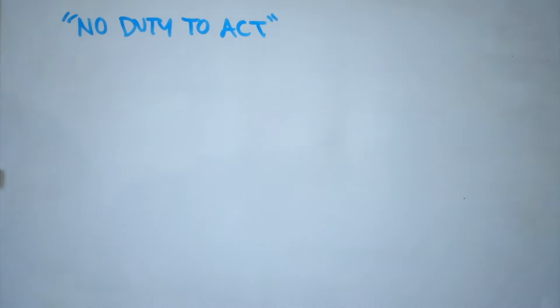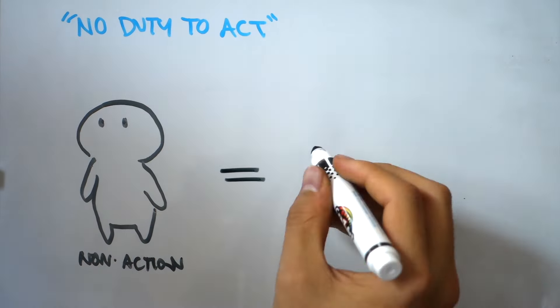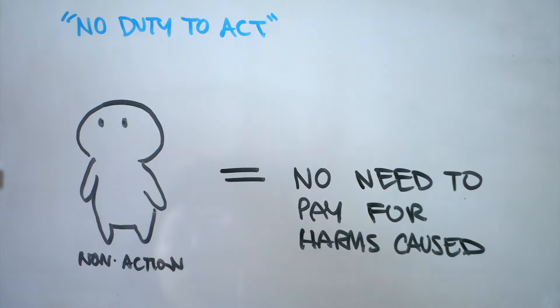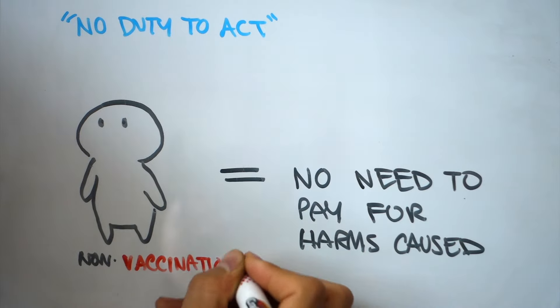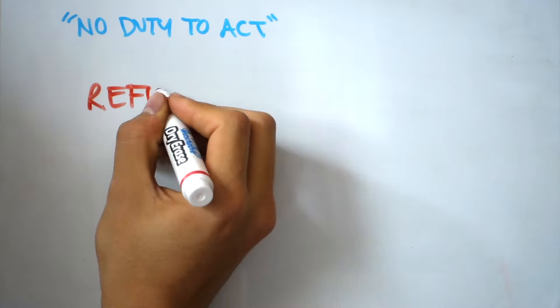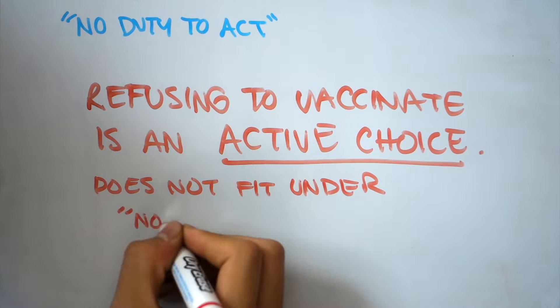A challenge of this entire proposal is that our legal system contains a no-duty-to-act rule where people don't have to pay for harms caused by their non-action. However, it's clear that the choice not to vaccinate is a conscious one where parents normally claim to have done extensive research and actively defend their decision against others.